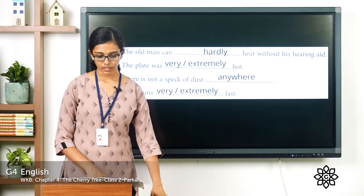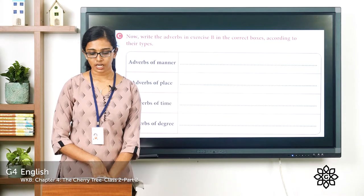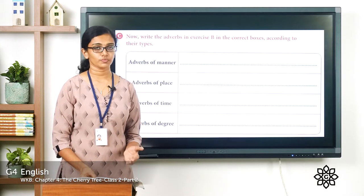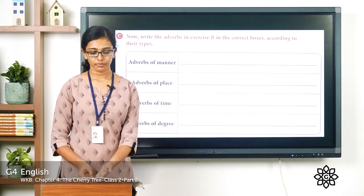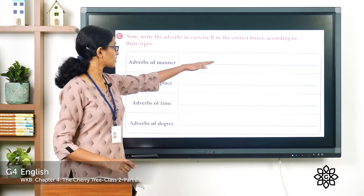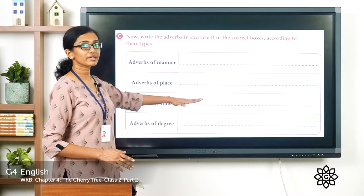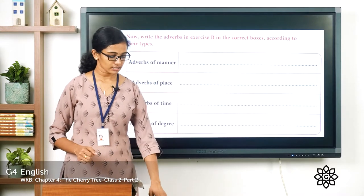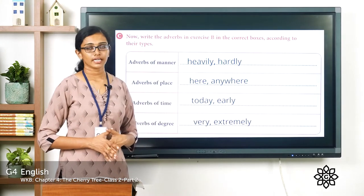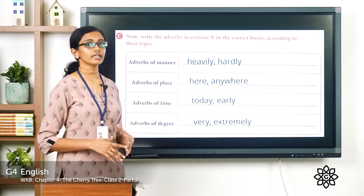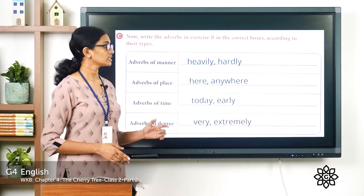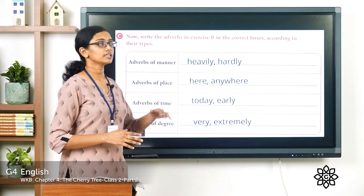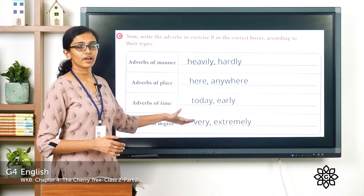Now let us move on to the next exercise: write the adverbs from exercise B in the correct boxes according to their types. You have to write adverbs of manner, place, time, and degree in the respective columns. The adverbs of manner were 'heavily' and 'hardly.' The adverbs of place were 'here' and 'anywhere.' The adverbs of time were 'today' and 'early.' The adverbs of degree were 'very' and 'extremely.'